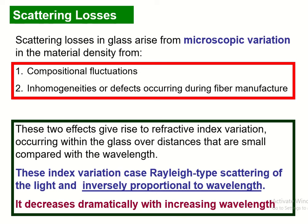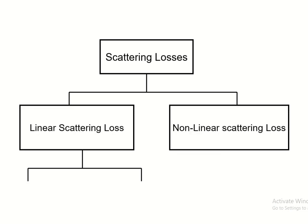Among all types of scattering loss, Rayleigh-type scattering commonly occurs in optical fiber communication. In Rayleigh-type scattering, there is a scattering loss due to index variation, and that loss is inversely proportional to wavelength — specifically, Rayleigh scattering loss is inversely proportional to lambda to the power 4. This means when the wavelength increases, the losses decrease dramatically.